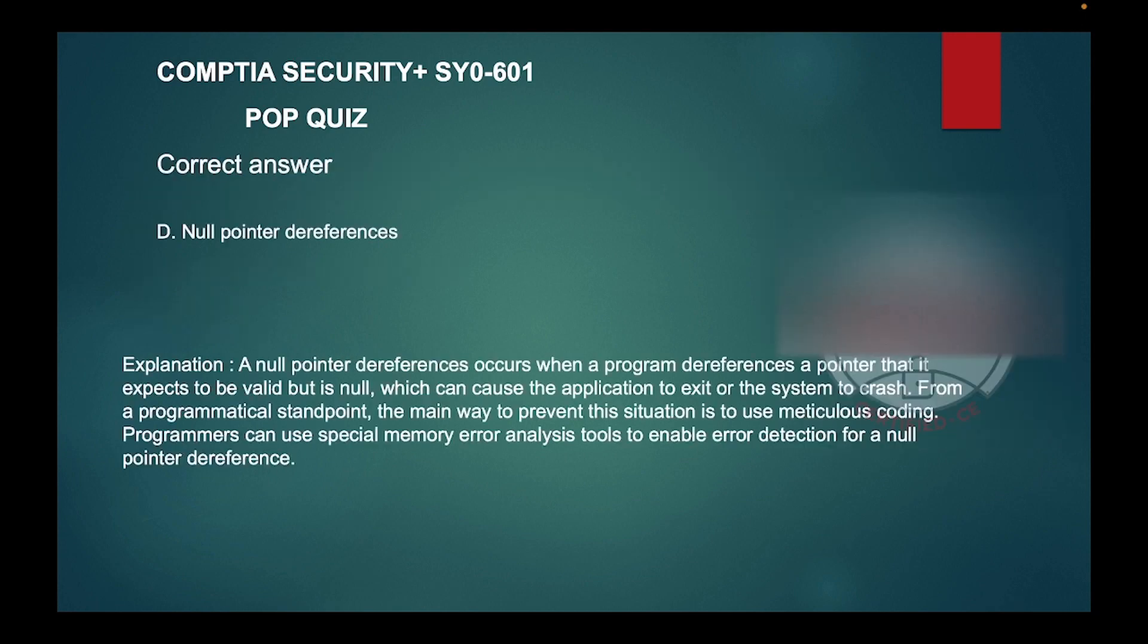The correct answer is D: Null pointer dereferences. A null pointer dereference occurs when a program dereferences a pointer that it expects to be valid but is null, which can cause the application to exit or the system to crash. From a programmatical standpoint, the main way to prevent this situation is to use meticulous coding. Programmers can use special memory error analysis tools to enable error detection for a null pointer dereference.